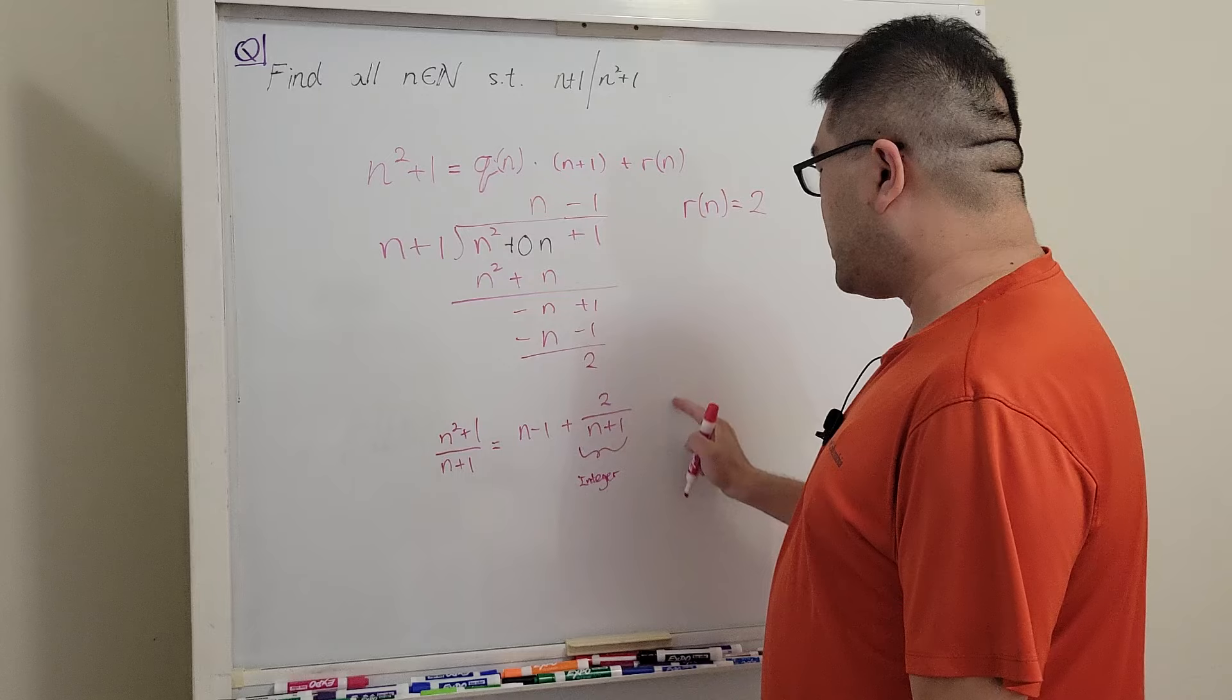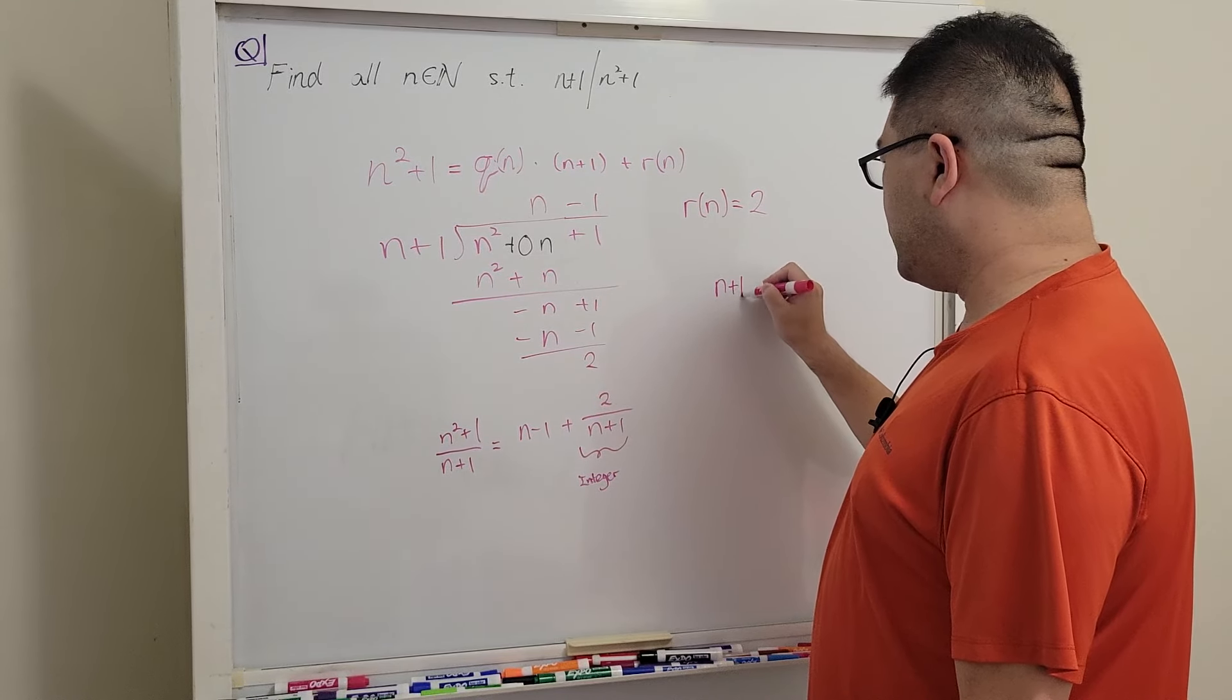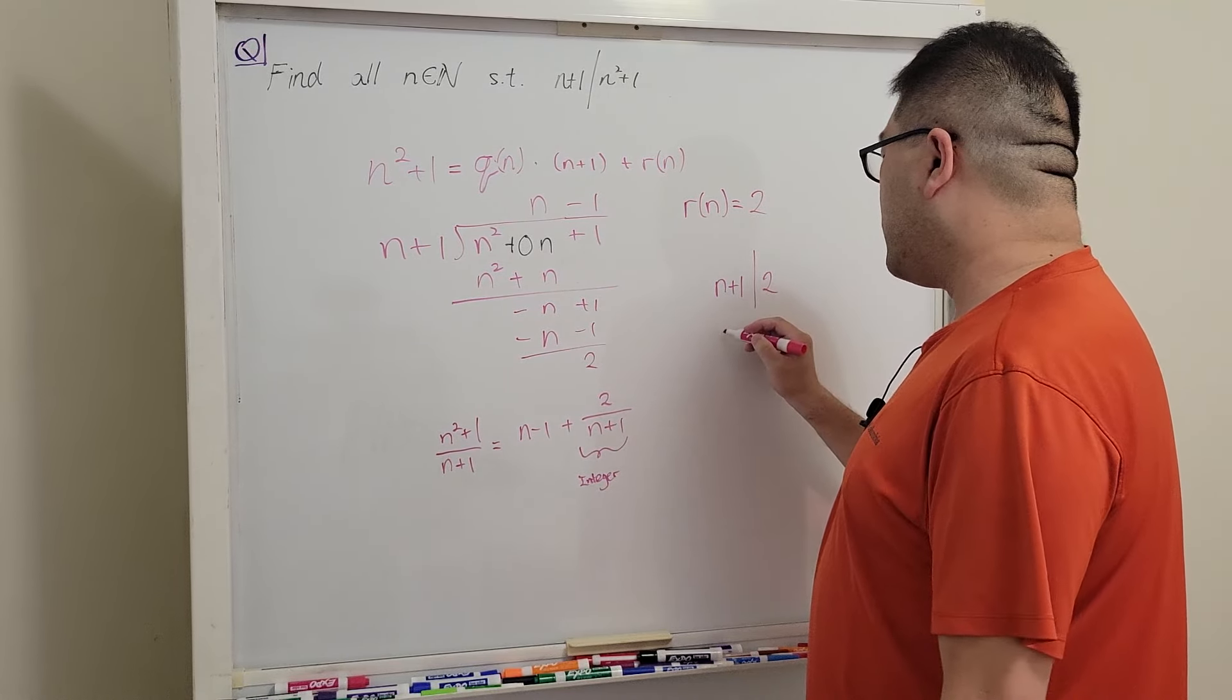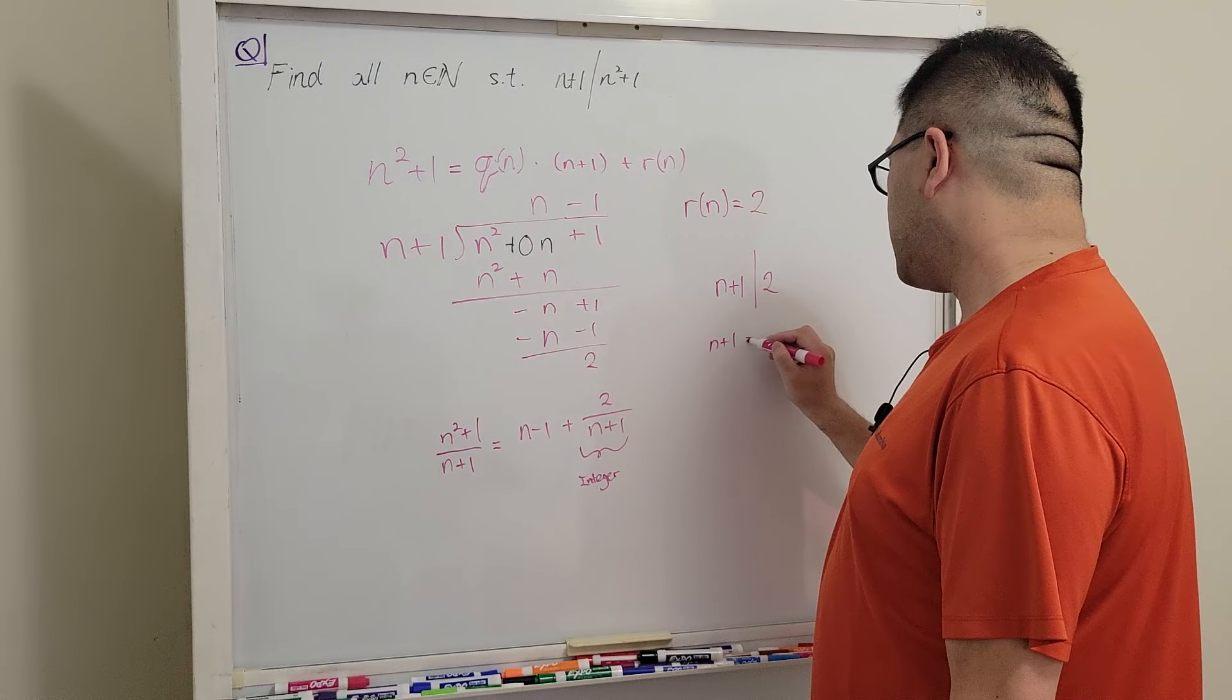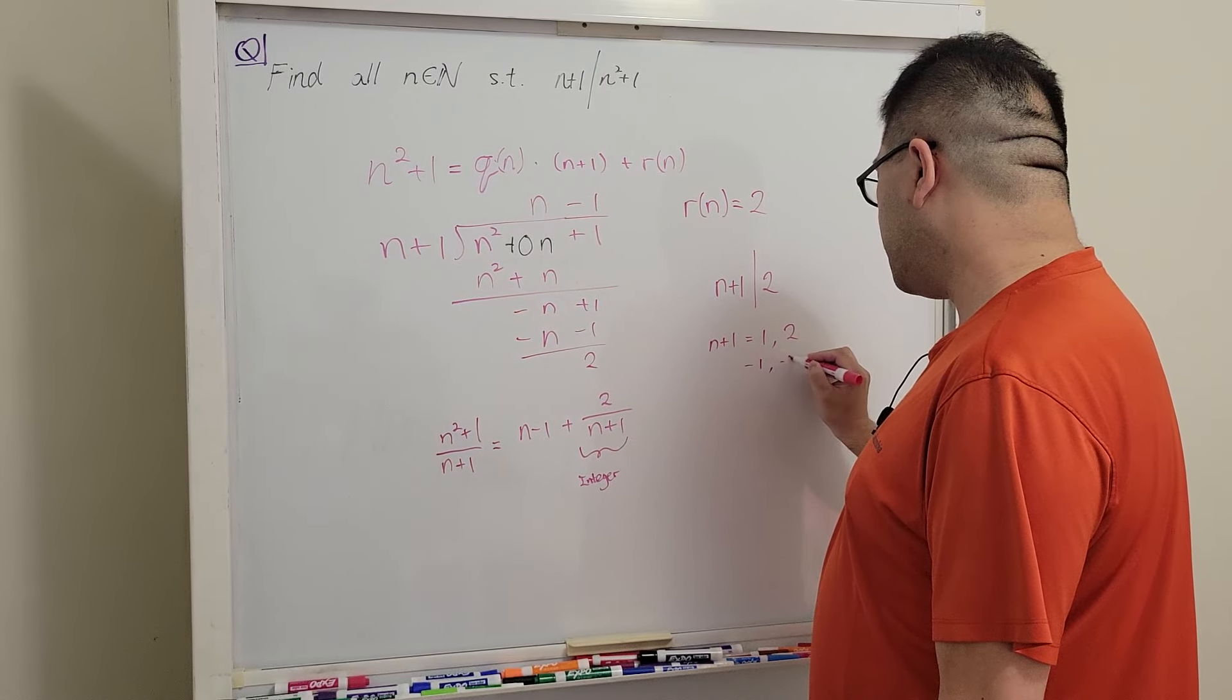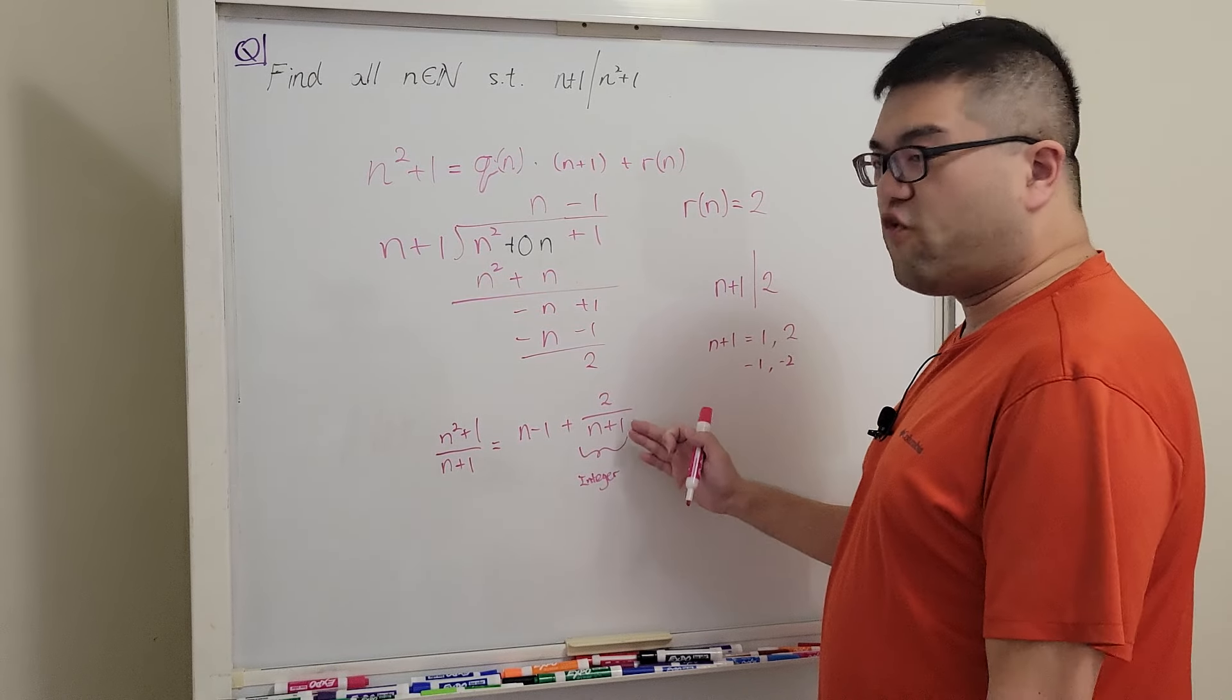Therefore, if we try to make this an integer, we need 2 as a multiple of n plus 1. So what is the only option that we have? We only have n plus one is equal to 1 or 2. Of course we can also include negative 1 and negative 2 in this case as our possible answers such that the whole fraction will turn out to be an integer.